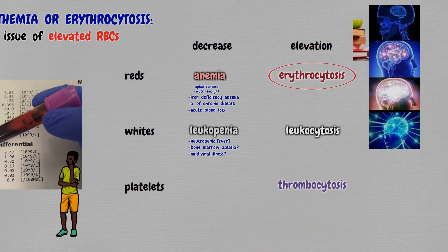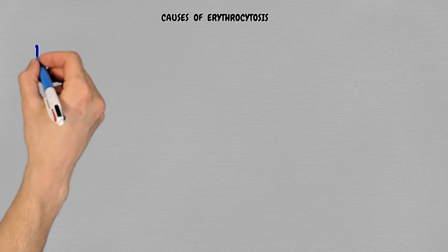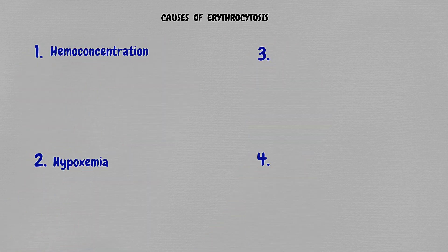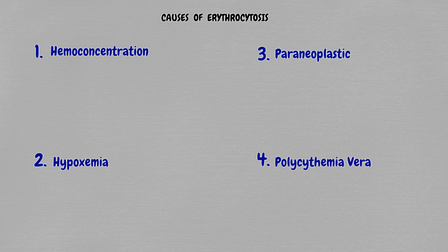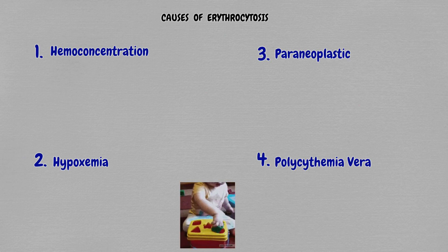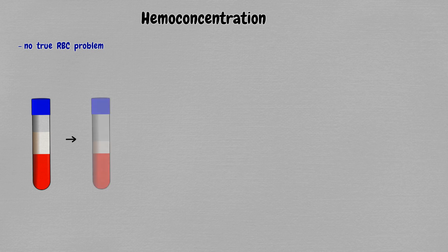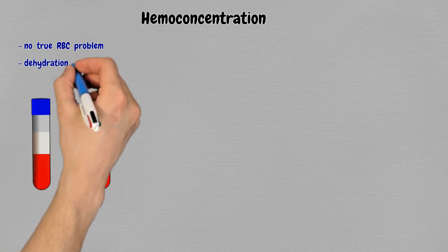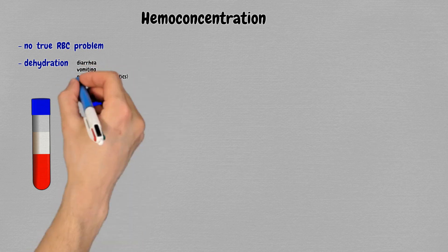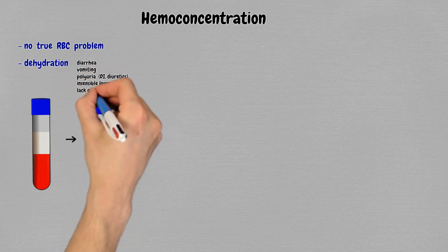What are the causes of erythrocytosis? There are four: hemoconcentration, hypoxemia, paraneoplastic, and polycythemia vera. The most intuitive way to remember them is to organize them from least to most specific. First, hemoconcentration — it's not really a problem of red cells at all, it's just a simple chemistry problem: same solution, less diluent, increased concentration. The telltale sign is someone in whom you'd suspect dehydration — fluid losses from vomiting, diarrhea, polyuria, and even in acute illnesses from increased insensible losses and decreased access to hydration.